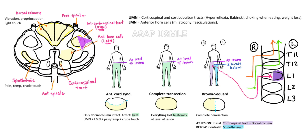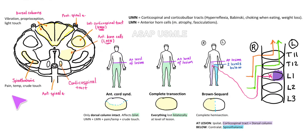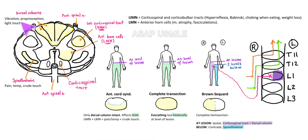Anterolaterally, here in the front and on the sides, we can find the corticospinal tract, which carries upper motor neurons, the anterior horn cells carrying lower motor neurons, and the spinothalamic tract carrying sensation of pain, temperature, and crude touch. On the posterior side, we have mainly the dorsal columns carrying sensation of vibration, proprioception, and light touch.